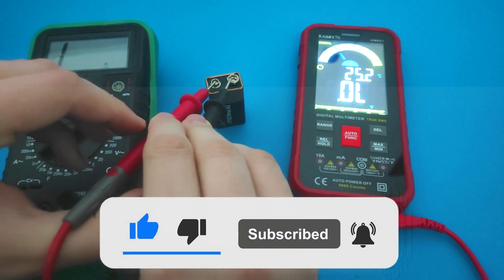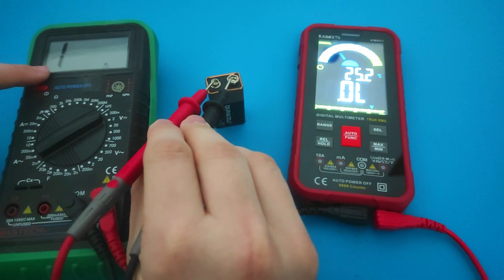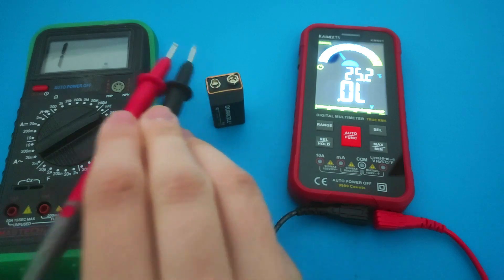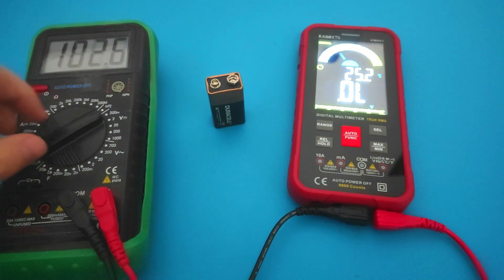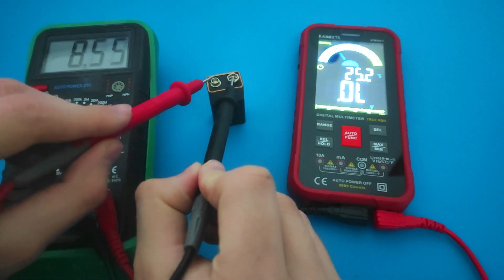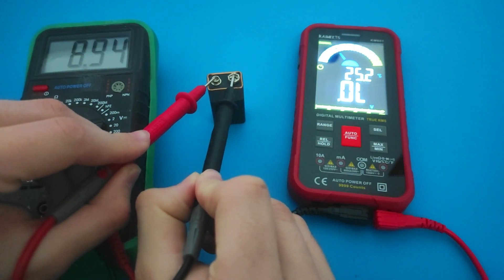Now, if we set the voltage range on the multimeter to be higher than the voltage of the battery being tested, we can obtain an accurate measurement. As you can see, the overload disappears on the multimeter when we measure with a larger range.